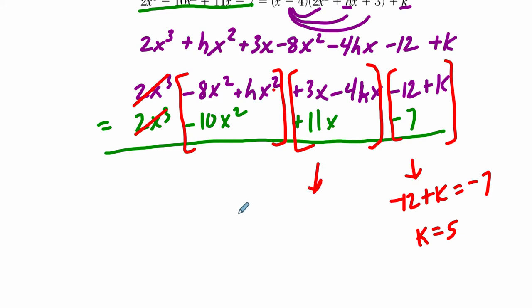Here, we have 3x minus 4hx equals 11x, right? So I'm going to factor x out on this side, and we have 3 minus 4h equals 11x. So I'm going to actually write the left-hand side differently. I'm going to say that it is 3 minus 4h times x. Now, I guess you could divide both sides by x here assuming it's not zero, but it's probably easier to say that this coefficient of x has to equal this one in order for both sides to be equal.